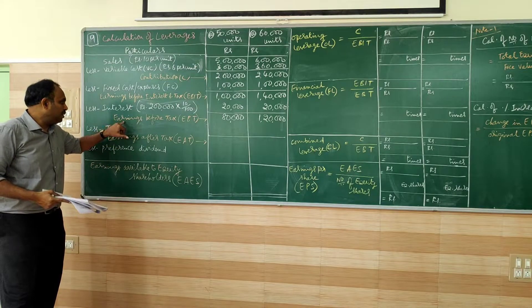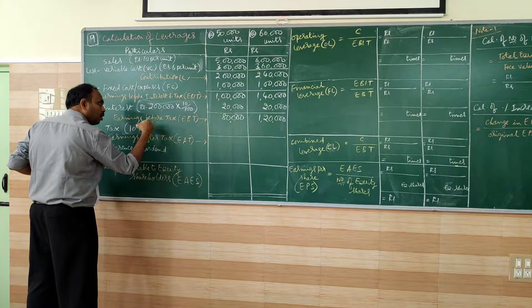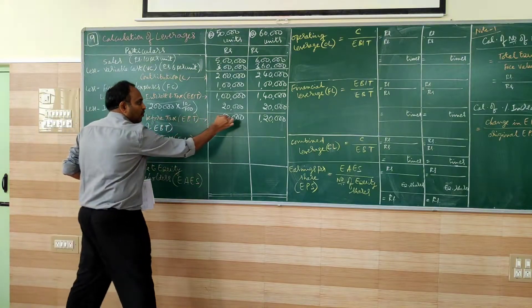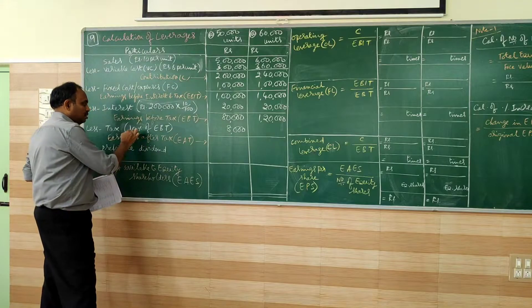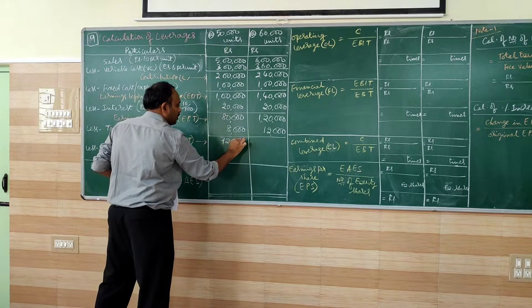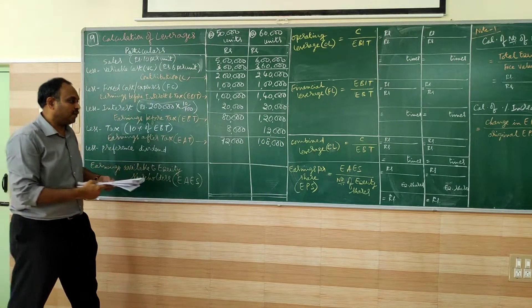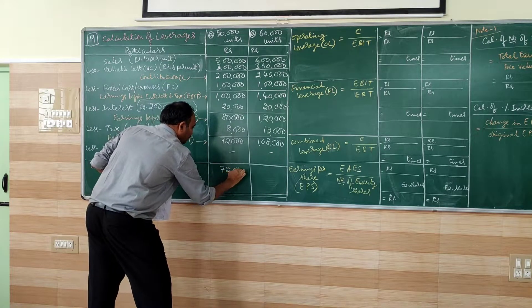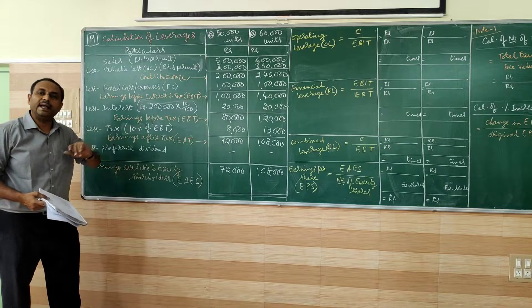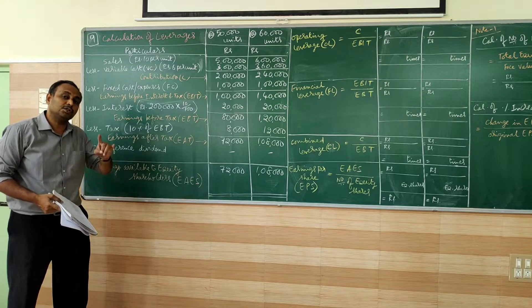From EBT, less tax. Given in the problem, 10%. 10% of what is not given, we have to understand: 10% of EBT. So 10% of 80,000 will be 8,000. 10% of 1 lakh 20 is 12,000. So deduct: 72,000 and 1 lakh 8,000. Again, we don't have preference dividend, so we carry the same amount of EAT as EAPS: 72,000 and 1 lakh 8,000. So this is earnings available to equity shareholders, which is important for calculation of EPS.